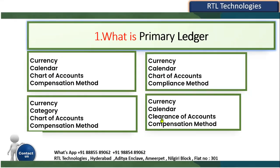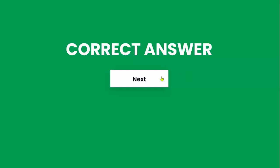We know that a ledger is nothing but four C's — but which four C's are going to be defined? The ledger is a group of four forces used to maintain accounting entries in a proper format. Those are: currency, calendar (accounting date), chart of accounts (a group of segments), and accounting method. These four C's define the primary ledger. Click on this — this is the correct answer.